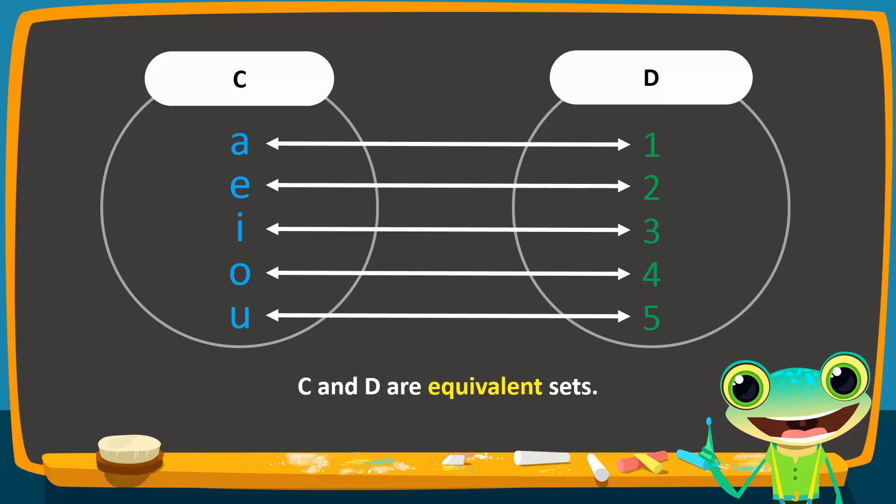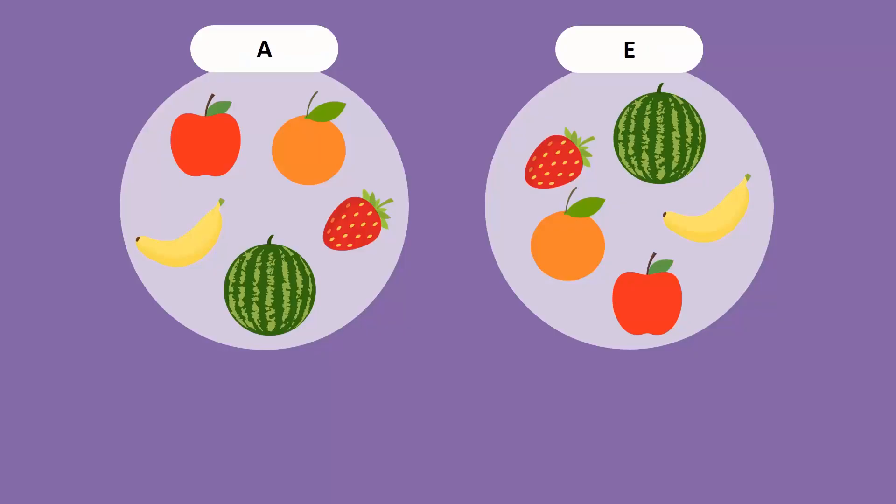What are equal sets then? To understand the concept of equal sets, consider these two sets. Set A is from the first example. Set E is another set of fruits. Do you see any similarity between these two sets?